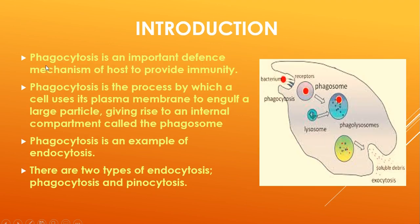Phagocytosis is an important defense mechanism of the host to provide immunity — that means to protect itself from pathogens. It is a process by which a phagocytic cell uses its plasma membrane to engulf a large particle, giving rise to an internal compartment called a phagosome. This phagosome containing cell is then lysed. Phagocytosis is an example of endocytosis, which is of two types: phagocytosis and pinocytosis.